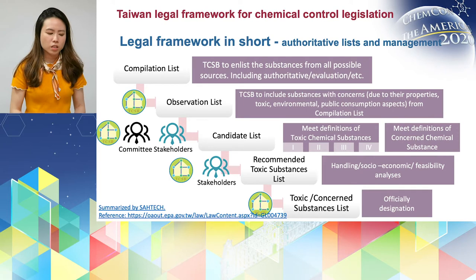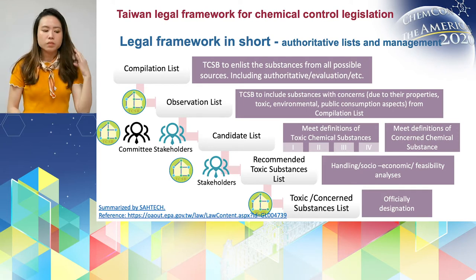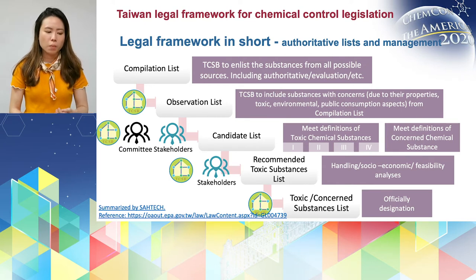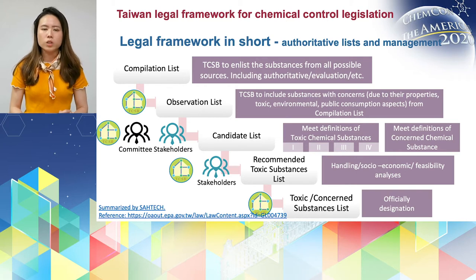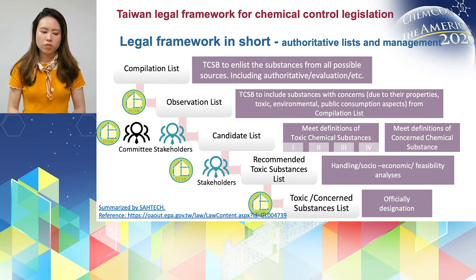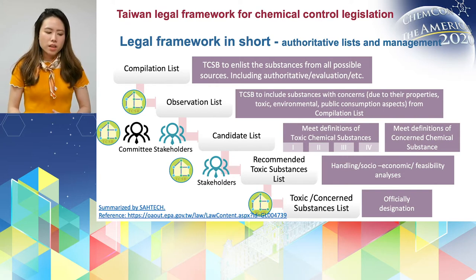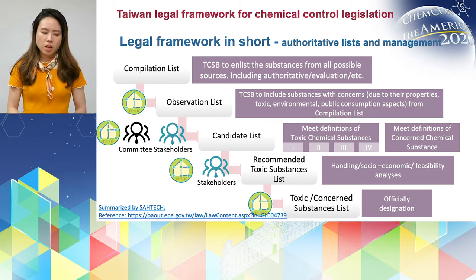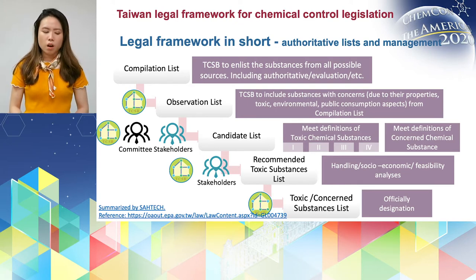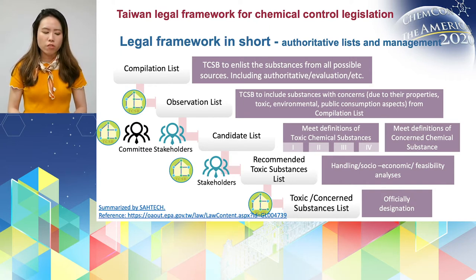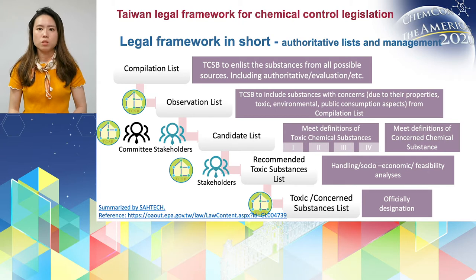The next step is to make a candidate list. In this step, TCSB will involve committees and stakeholders to see if those substances actually meet the criteria or the definition of toxic chemical substance class 1, 2, 3, or 4, or if the substances meet the definition of concerned chemical substance.